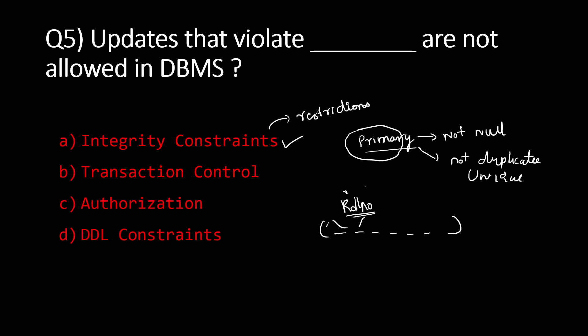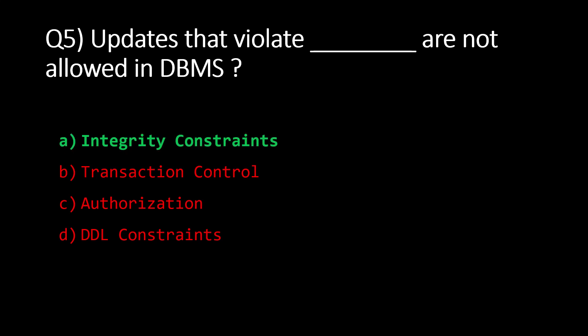For example, if a student's roll number is the primary key and you try to update it to NULL, that update will not be accepted because it violates the integrity constraint of that table. Transaction control, authorization, and DDL constraints cannot be changed using UPDATE commands since updates fall under DML. Therefore, option A — integrity constraints — is the correct answer.